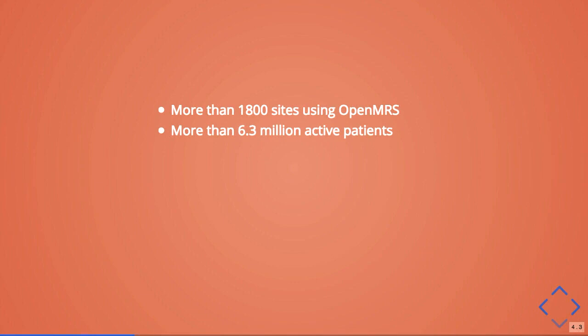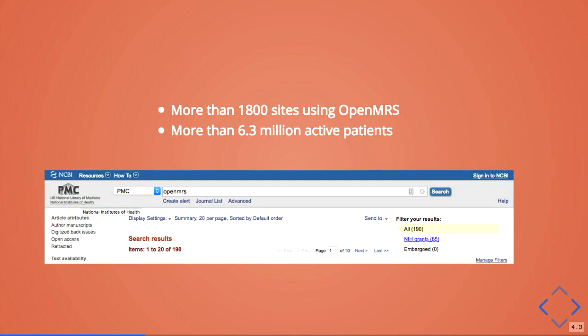Because of this, we have OpenMRS deployed in several different places around the world. This data is from 2015: we have at least 1,800 sites — clinics, hospitals, and other locations using OpenMRS — with more than 6 million active patients. That number is probably bigger now. Because we are a medical record system, we are cited in a lot of different articles in PubMed, with almost 200 articles citing OpenMRS. PubMed is pretty much like Google for medical articles.